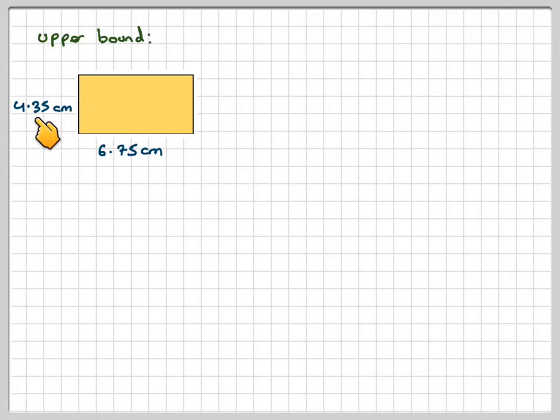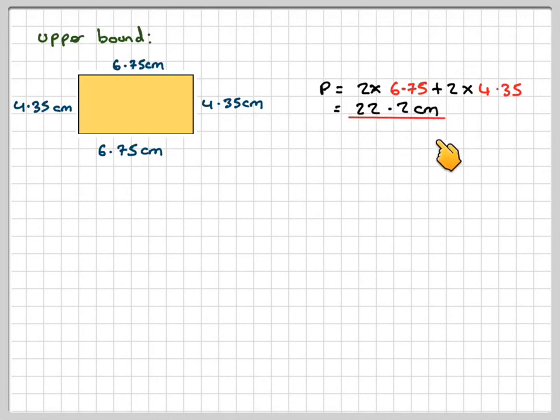And then for the upper bound, doing the same thing, taking the upper bounds for the length, which is 6.75 centimeters, the upper bound for the width, which is 4.35 centimeters, then this will be 6.75 and this will be 4.35. Then the perimeter will be 2 times 6.75 plus 2 times 4.35, which would give 22.2 centimeters.